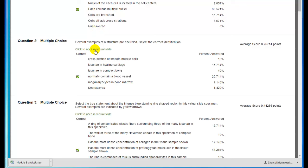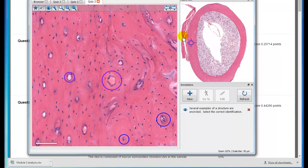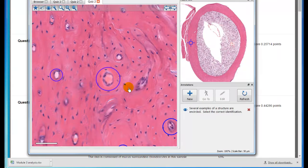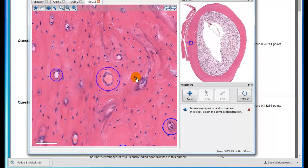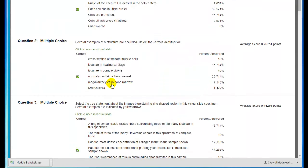The next question was question two. Several examples of a structure are encircled. Select correct identification. The correct answer was normally contain a blood vessel. Only 25% of the class got that correct. Here's the specimen. This is compact bone. You can see the osteones and these little holes. If you enlarge this, you'll see nuclei in a concentric pattern around these open holes. So those are osteones, and these are Haversian canals. This particular one has blood in it. These are empty, but in life they would have blood flowing through them. So that has to be the correct answer.